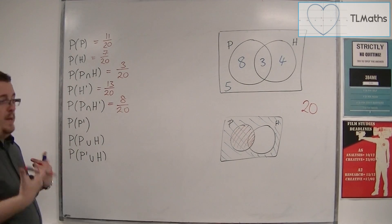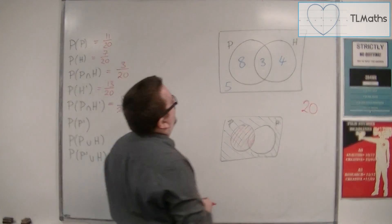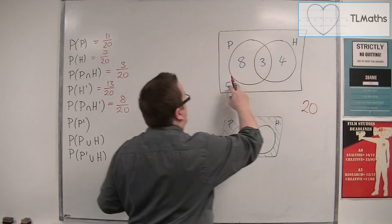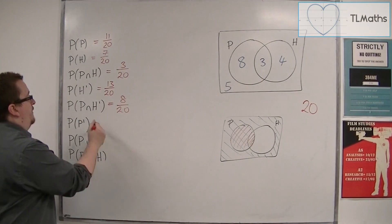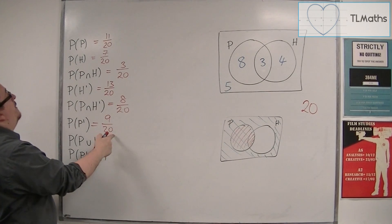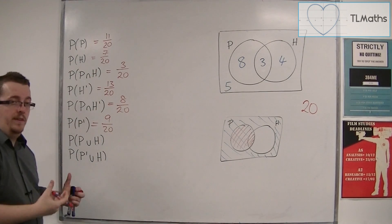Now, the probability of not P. So similar to the probability of not H, we're just going to look at 4 plus 5, which is 9. So 9 out of 20. You can also work it out as 1 take away 11 twentieths.